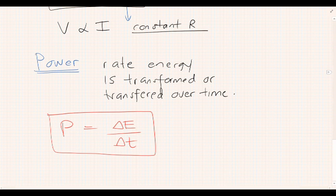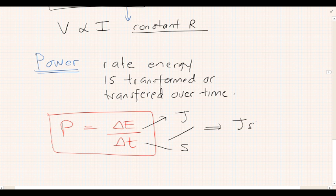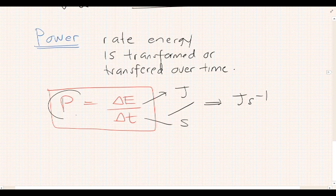If we have a look at that, energy has units of joules, time has units of seconds, so it must be joules per second. This is also commonly referred to as Watt, capital W.